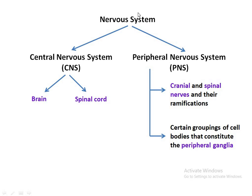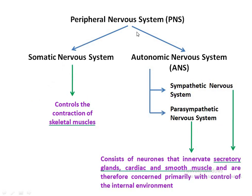The nervous system can be classified into two major components. Number one is the central nervous system (CNS), consisting of the brain and spinal cord. Number two is the peripheral nervous system (PNS), consisting of cranial and spinal nerves and their ramifications — that is, their branchings. All cranial and spinal nerves and their branchings belong to the peripheral nervous system, and they consist of certain peripheral ganglions where the cell bodies of neurons are accumulated.